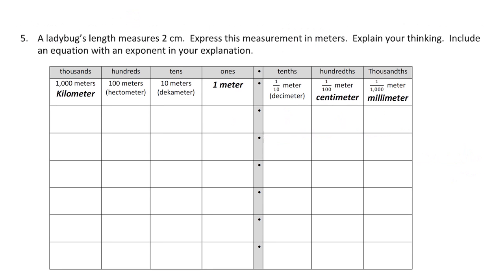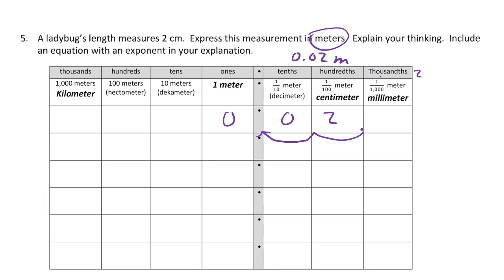The next problem: a ladybug measures 2 centimeters; they want to know how much that is in meters. I add my zeros, so that becomes 0 and 2 hundredths of a meter. That got smaller — the decimal was here and it went twice — so 2 divided by 10 to the second power equals 2 hundredths.